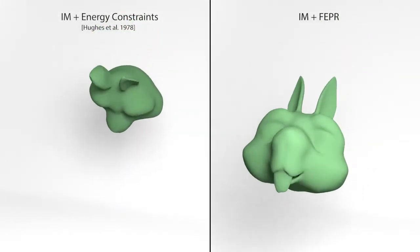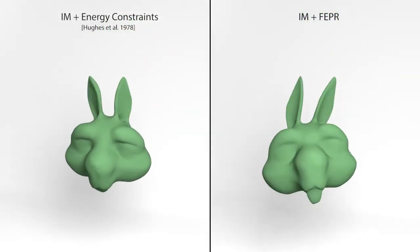Imposing only energy conservation using Lagrange multipliers can upset momenta and lead to artifacts.